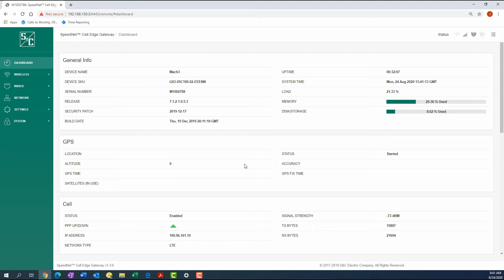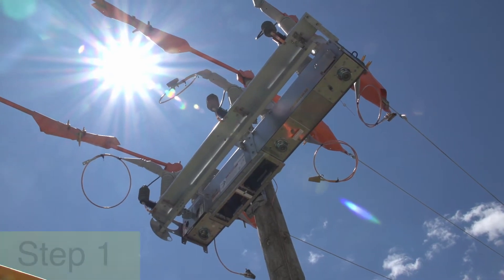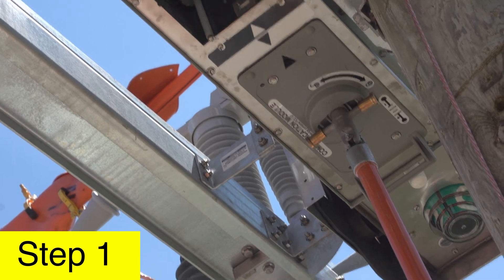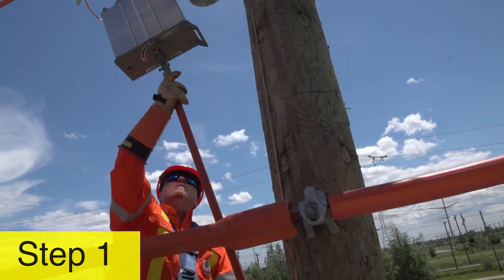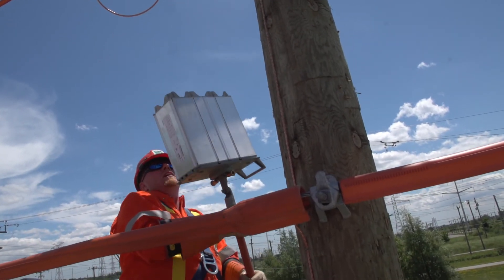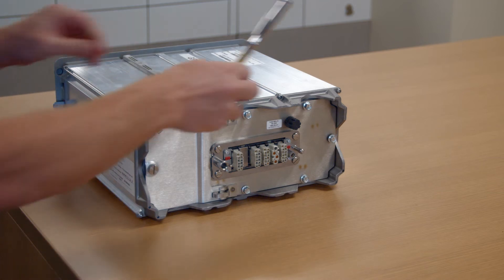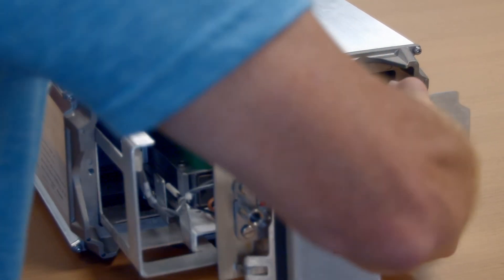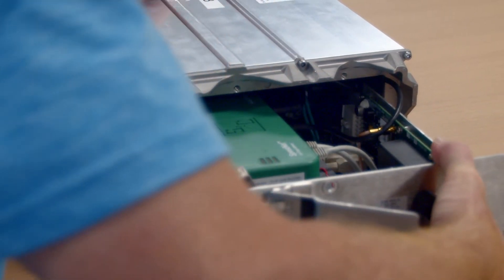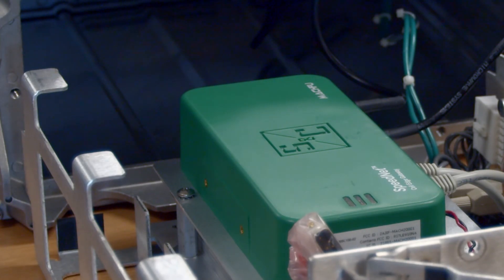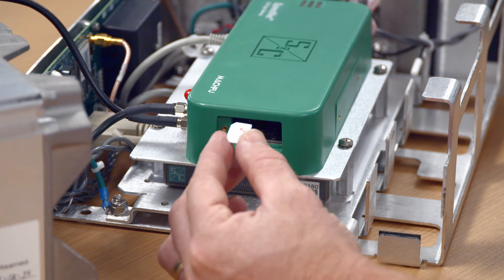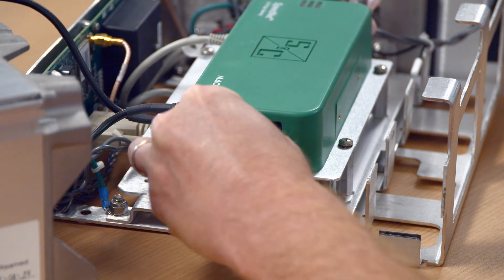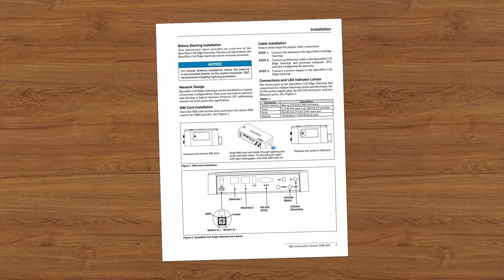You will need access to the gateway's Ethernet ports. Step 1: Following the instructions in the manufacturer's documentation for your automation device, access the gateway. In this example, using the Intelliruptor Pulse Closer Fault Interrupter, it is located in the Communications Module. If required, install the gateway's SIM card as instructed on page 7 of SNC Instruction Sheet 1076-510.